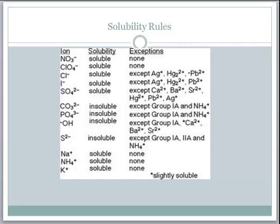If you're looking at double replacement reactions, you need to use a chart that refers to the solubility rules. We'll talk more about solubility after we do some examples of single replacement. For example, if a compound contains the polyatomic nitrate, those are soluble without any exceptions.